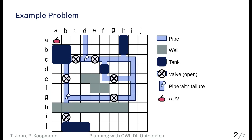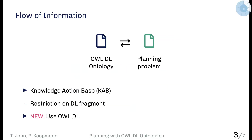What one can use for this is so-called knowledge action bases, where we have an OWL ontology — or an ontology in any description logic — that captures the semantics of how things behave, what types things are, and how they generally interact. This is kept separate from the planning aspect, where you describe the possible actions of the robot: what it can do, how it can manipulate things, and in which situations it can perform those actions.